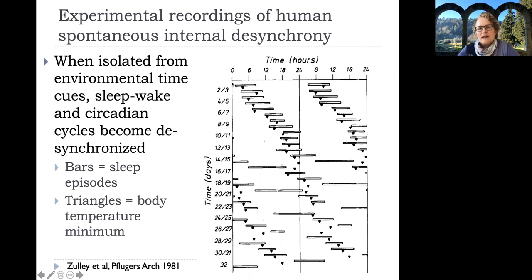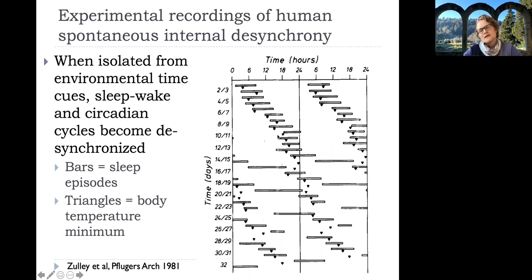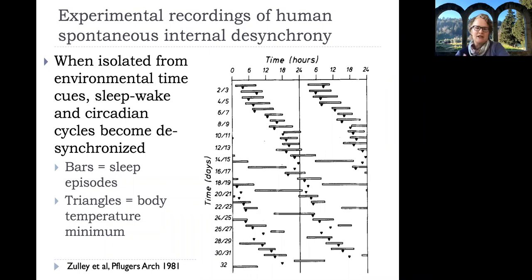Under this isolation protocol, for the first two weeks this individual kept their temperature minimum occurring during their sleep period, though with variability. Their period of the sleep-wake cycle was a little longer than 24 hours, as was their circadian minimum. This shows that our natural circadian clock is a little bit longer than 24 hours. So in the spring-ahead, we're not shifting our time clock in the way we would naturally like to shift — which would be to delay — instead we're trying to advance, which makes it so painful.